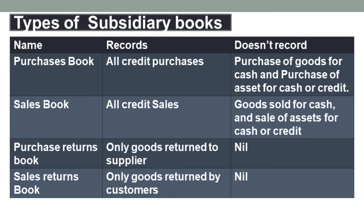Purchase book records all credit purchases, and it doesn't record purchase of goods for cash and purchase of asset for cash or credit. Sales book records all credit sales, and it doesn't record goods sold for cash and sale of assets for cash or credit.